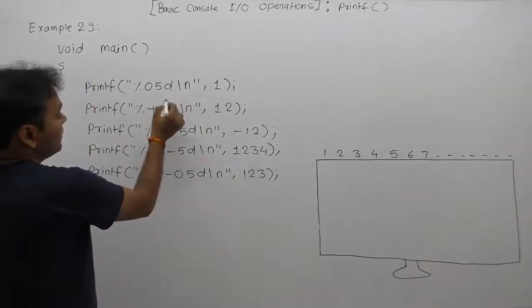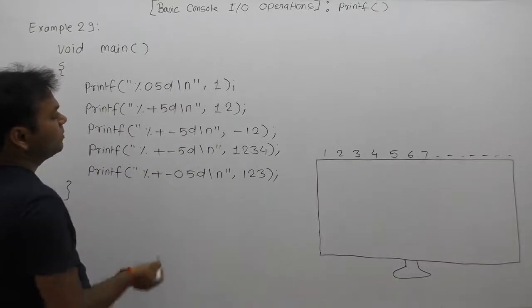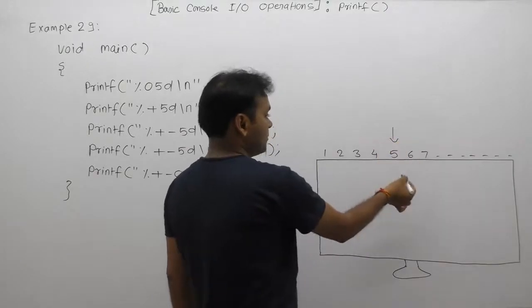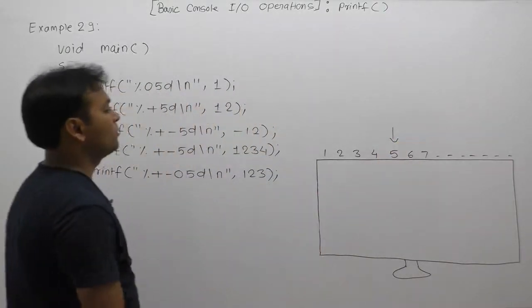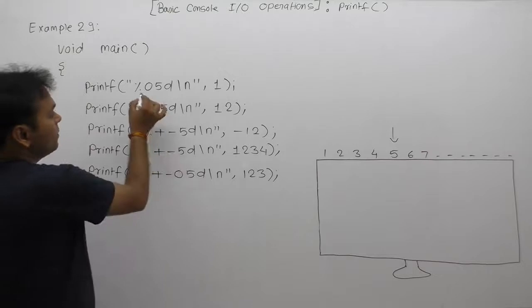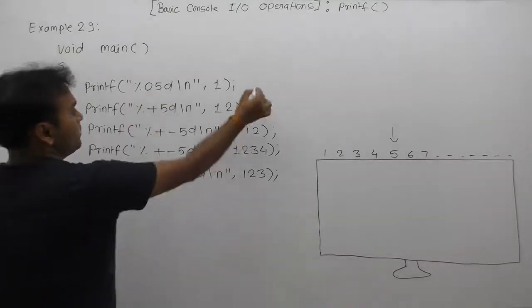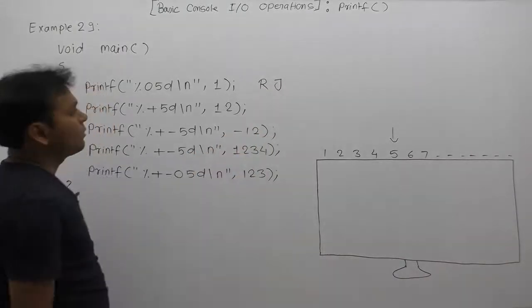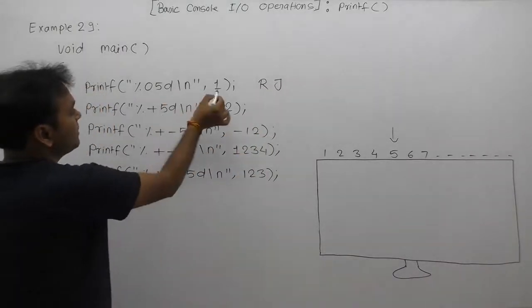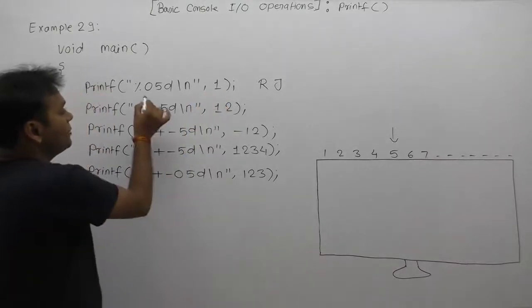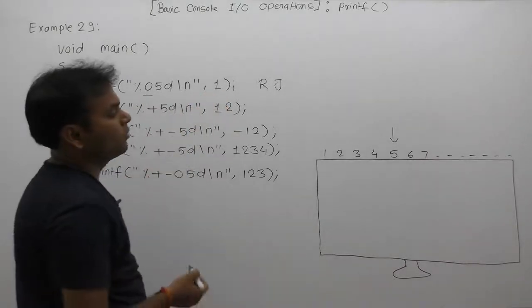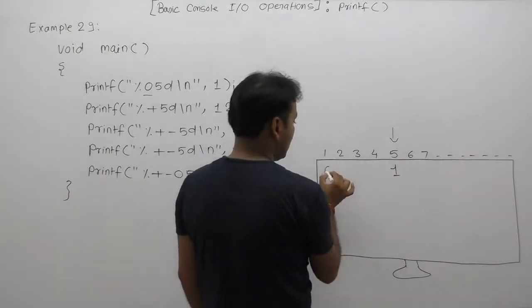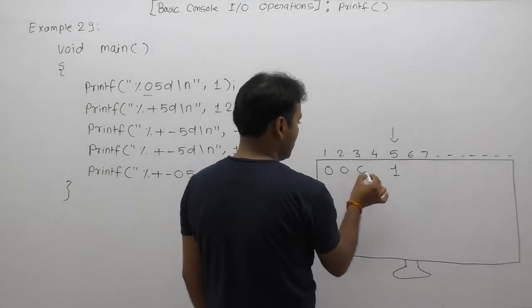In all cases, we are using a width value of 5. Therefore, we are displaying any number occupying 5 places, either from right to left or from left to right. First, since we are not using minus, the default value is right justified. According to right justification, the number is displayed as 1. But here we are using the padding symbol as 0, so the number is displayed as 1 with the remaining positions filled with 0s — that is, 00001.